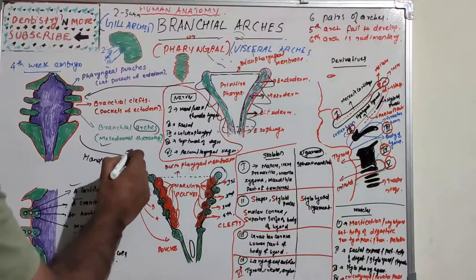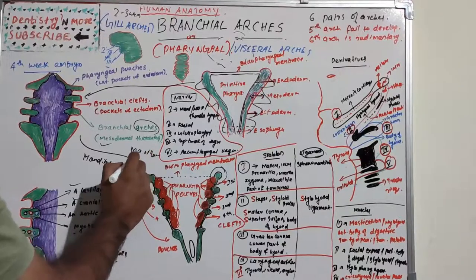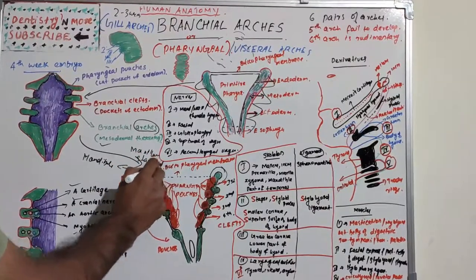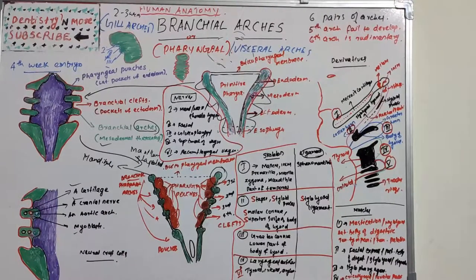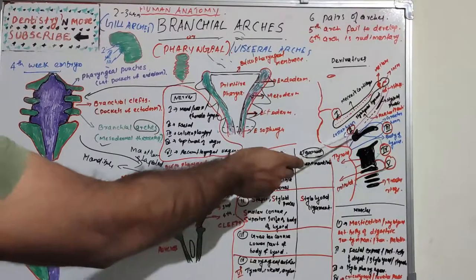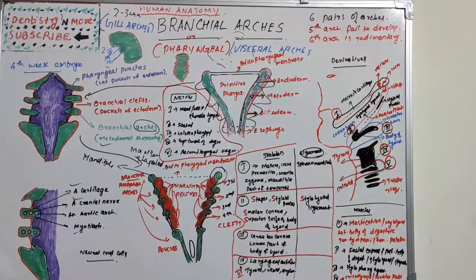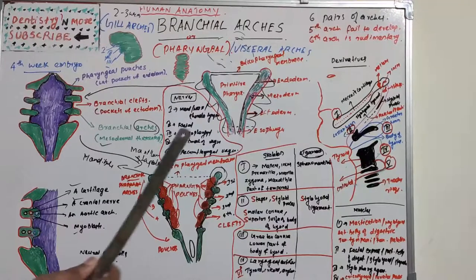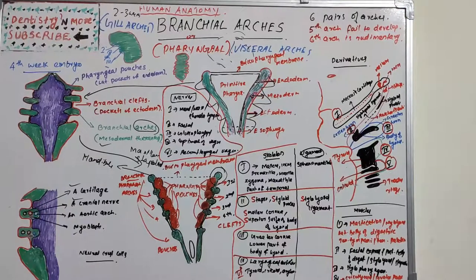The third arch gives rise to the greater cornu and the inferior surface of the body of the hyoid bone. There are no ligaments from the third, fourth, or sixth arches. The third arch gives rise to only one muscle: stylopharyngeus, with nerve supply from the glossopharyngeal nerve. The fourth and sixth arches give rise to the laryngeal cartilages — thyroid, cricoid, arytenoid, and other laryngeal cartilages.